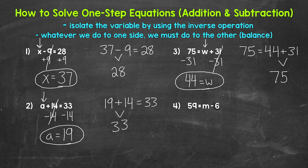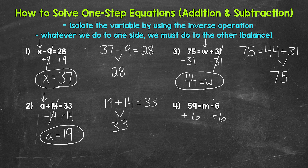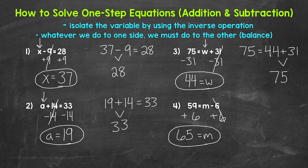And then lastly, number 4: we have 59 equals M minus 6. So we are subtracting 6 from M here. We need the inverse operation — the opposite of subtraction — that's addition. So let's add 6 to the right side of the equation. Whatever we do to one side, we must do to the other. So add 6 to the left side as well. On the right side of the equation, we are subtracting 6 and adding 6, so those 6s cancel each other out. M is now isolated. So we have M equals, and then on the left side, 59 plus 6 gives us 65. So M equals 65 — that's our solution.